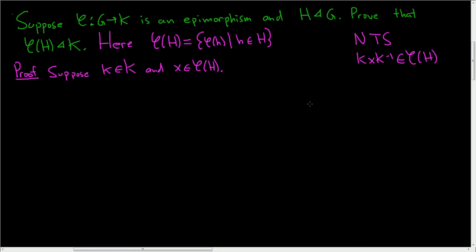So if we show that, we're done. We've shown that it's a normal subgroup of K. Well, since φ is onto,